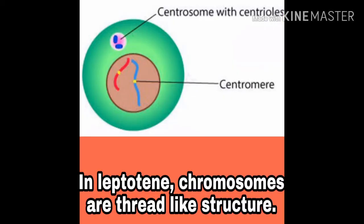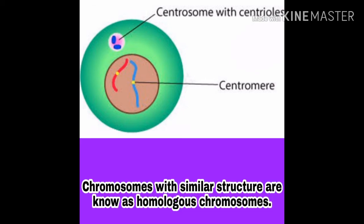First point of leptotene: in leptotene, chromosomes are thread-like structures. मतलब leptotene stage में chromosome धागे जैसे दिखते हैं।